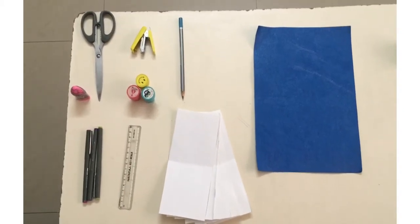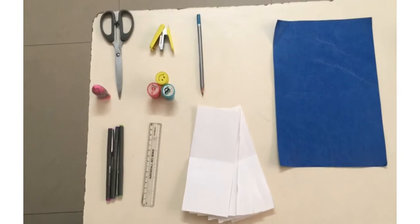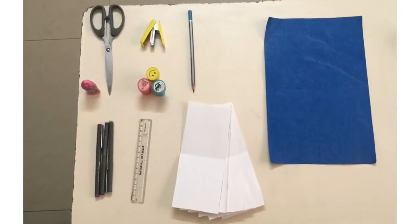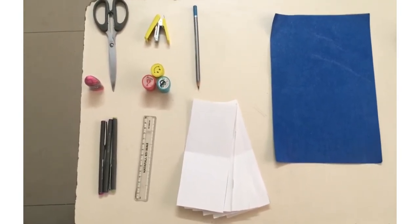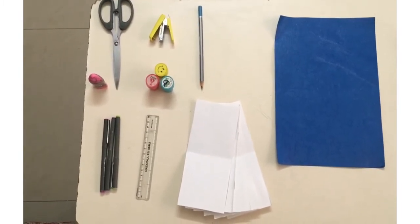The materials we need are a color chart paper or a glitter paper, few sheets, pencil, stamps, stapler, scale, color pens, an eraser and scissors. Come let us go into the video.